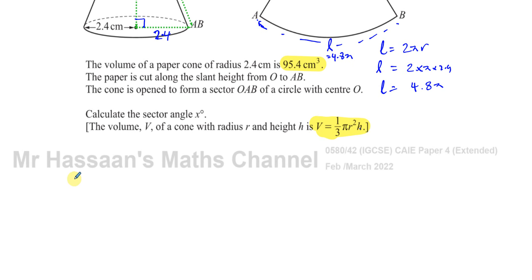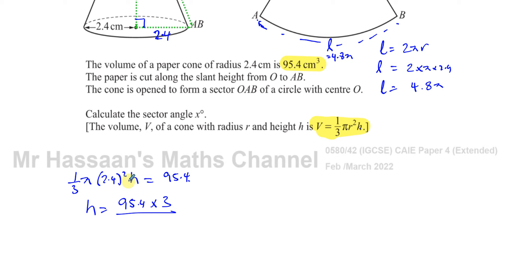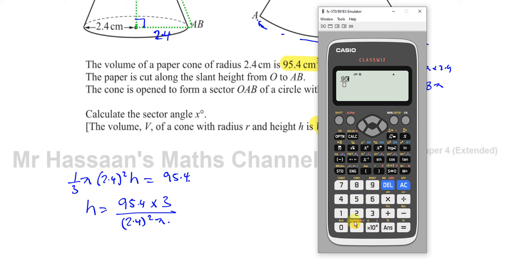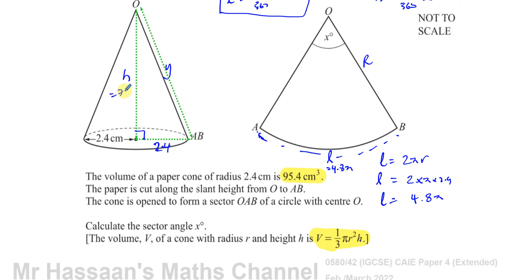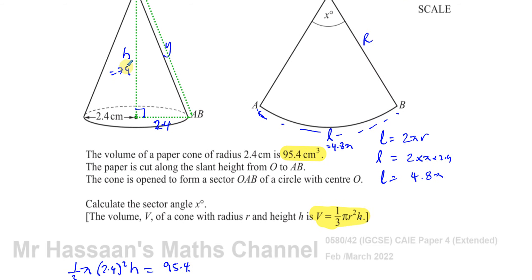We know the volume is 95.4 cm³ and r = 2.4 cm, so H is the only unknown. Setting up the equation: (1/3) × π × 2.4² × H = 95.4. Rearranging gives H = (95.4 × 3) / (2.4² × π) = 795/(16π). So the vertical height is 795/(16π).